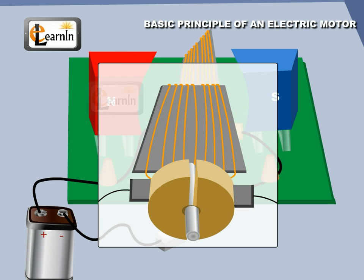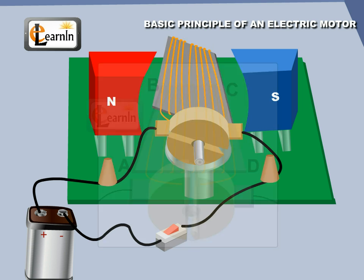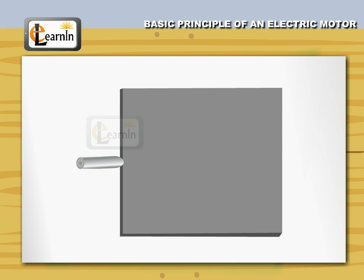Consider a rectangular coil ABCD connected to a battery B. Imagine the plane of the coil to be in the plane of the paper with the current direction shown here.